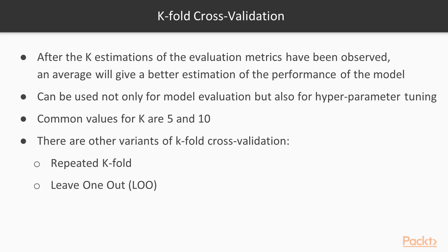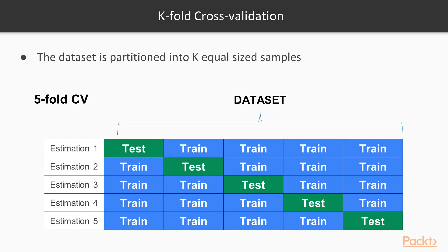The k-fold cross-validation method can be used not only for model evaluation but also for hyperparameter tuning. Common values for k are 5 and 10 — we usually use 10. There are other variants, like repeated cross-validation, where we perform k-fold cross-validation many times. For example, if you want 30 estimations of your evaluation metric, you can do 6 times 5-fold cross-validation to get 30 estimations.